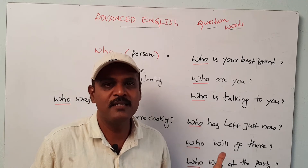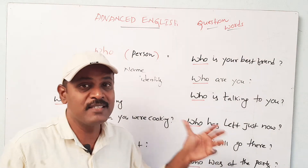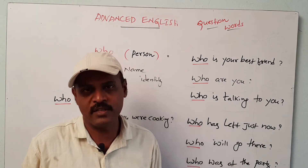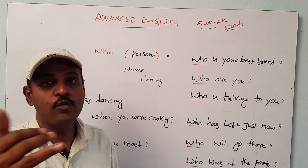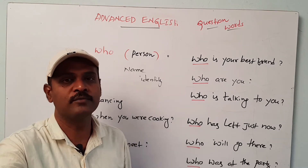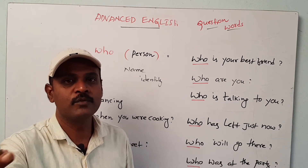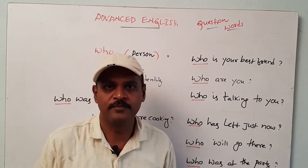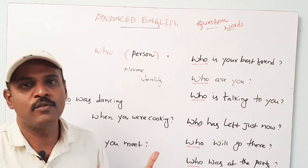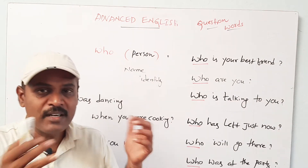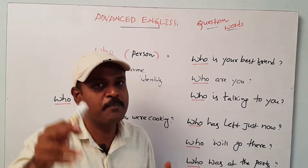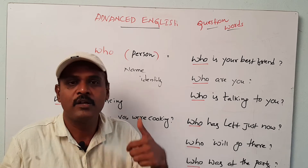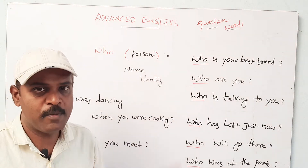'Who has left just now?' — it is in present perfect. Next: 'Who will go there?' — it is simple future. 'Who will go there along with you?' 'Who is coming with me?' Next: 'Who was at the party?' — it is simple past. In that action, who was at the party along with you? So in that way, we can ask questions with the help of 'who'.